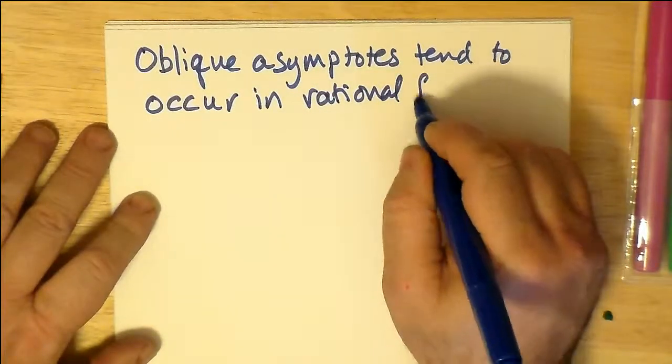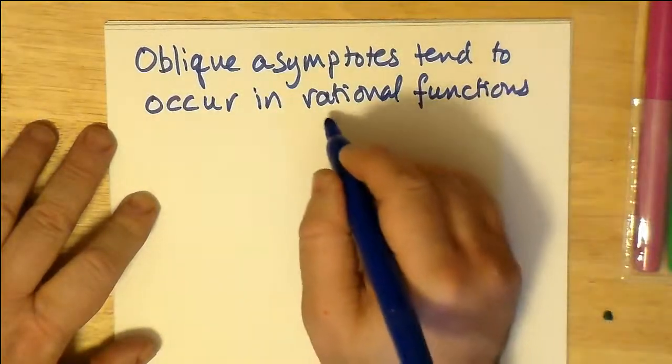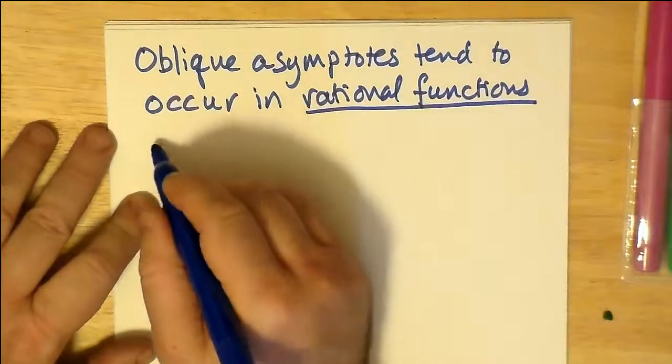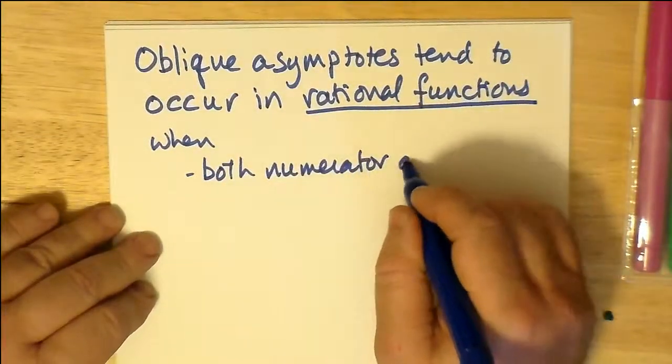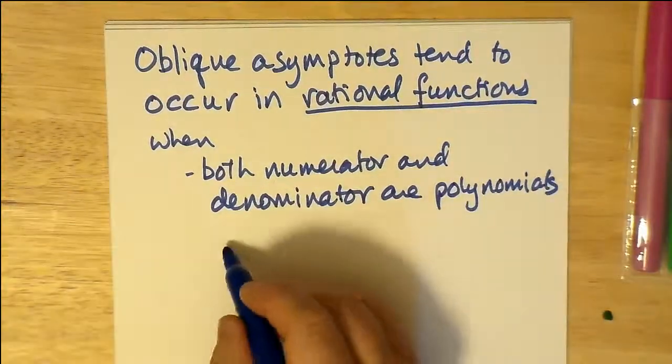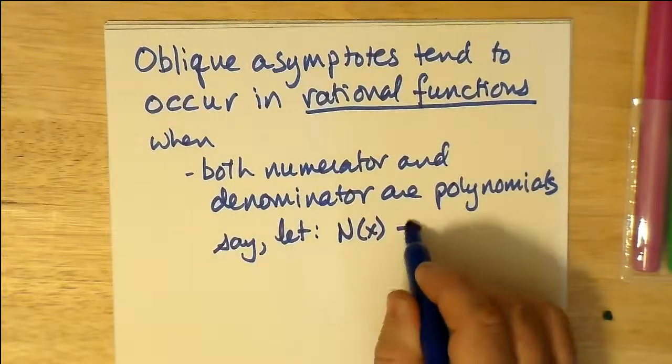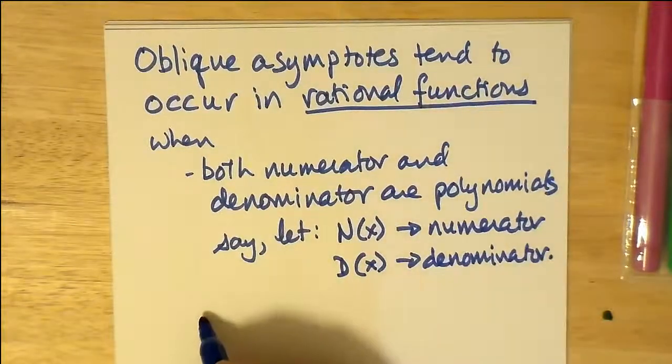There are a number of things which cause oblique asymptotes to happen in a rational function, but usually first of all the first precondition is that both top and bottom are polynomials. And of course, in the polynomials, the numerator has to be an order one greater than that of the denominator. So for example, there's a cubic in the numerator, there would have to be a quadratic in the denominator.